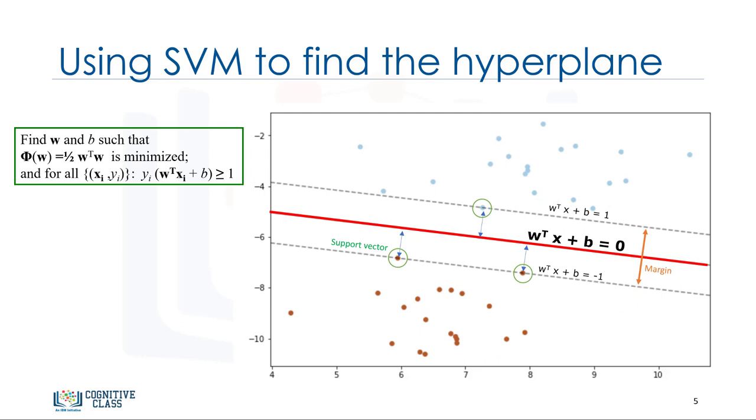So, finding the optimized hyperplane can be formalized using an equation which involves quite a bit more math, so I'm not going to go through it here in detail. That said, the hyperplane is learned from training data, using an optimization procedure that maximizes the margin. And like many other problems, this optimization problem can also be solved by gradient descent, which is out of scope of this video. Therefore, the output of the algorithm is the values w and b for the line. You can make classifications using this estimated line.